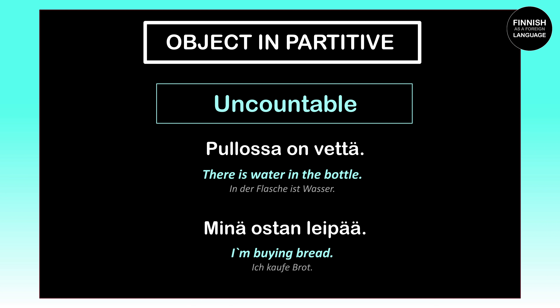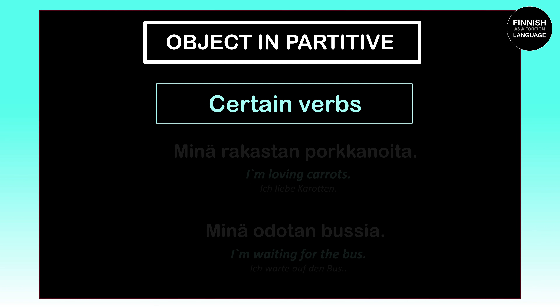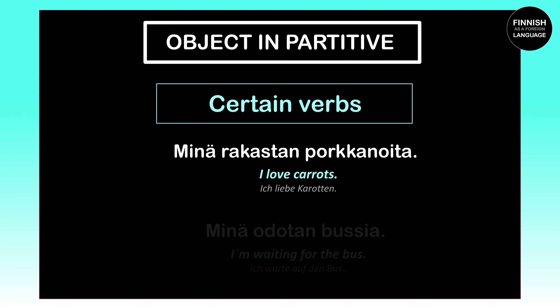The object can also stand in the partitive case after specific verbs, which we call partitive verbs. Here's one example: 'Minä rakastan porkkanoita' means 'I love carrots.' Our object is 'porkkanoita,' which is the partitive plural of 'porkkana,' meaning 'carrot.' We use the partitive plural because the verb 'rakastaa,' meaning 'to love,' requires the partitive case — it's a so-called partitive verb. We also use it because we're talking about carrots in general, not about specific carrots.